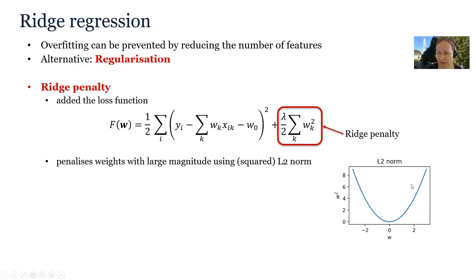Here we plotted the penalty for the individual weights, and we see that if the weight is zero the penalty is zero as well. As it increases its magnitude in either the positive or negative direction, the penalty will increase quadratically with it.